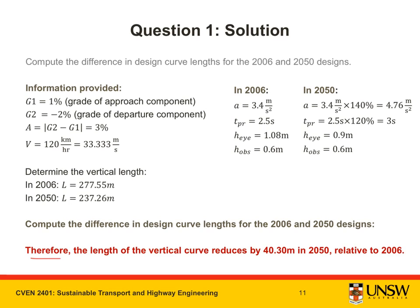Here is how we'd represent our answer in word form. Therefore, the length of the vertical curve reduces by 40.3 meters in 2050 relative to 2006. Thanks for watching this video and good luck. See you in the next one.